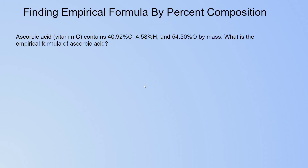So how do you find an empirical formula using percent composition? The easy way to understand this is to show it in a practice problem. Ascorbic acid, which is vitamin C, contains 40.92% carbon, 4.58% hydrogen, and 54.50% oxygen by mass. What is the empirical formula of ascorbic acid?